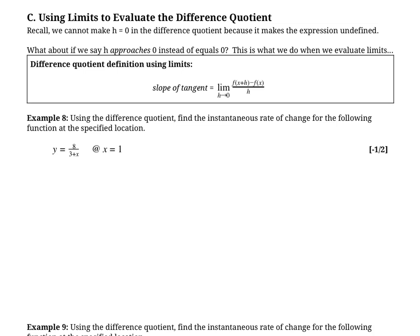So we know the difference quotient looks like this, right? And h at the bottom isn't allowed to be zero, right? So what we were doing in the last lesson is we're just plugging in really small values very close to zero.